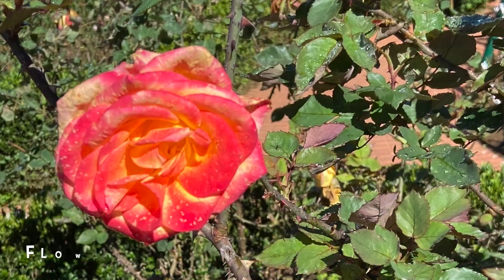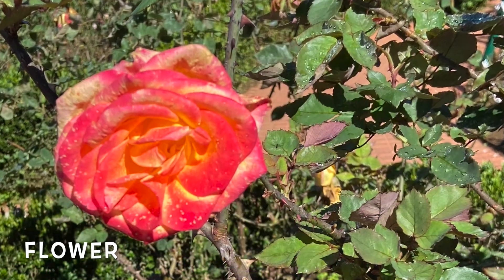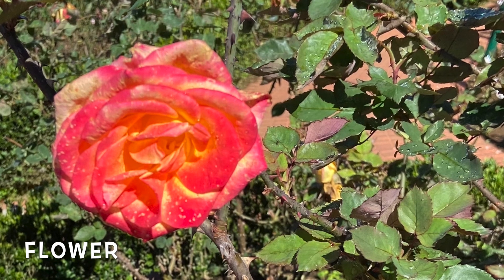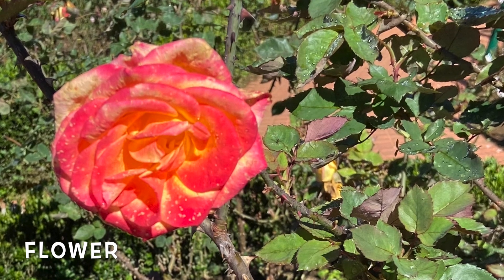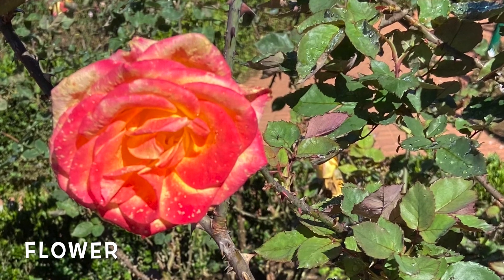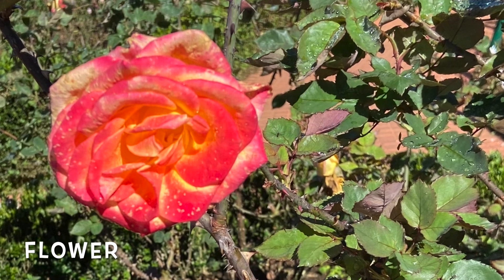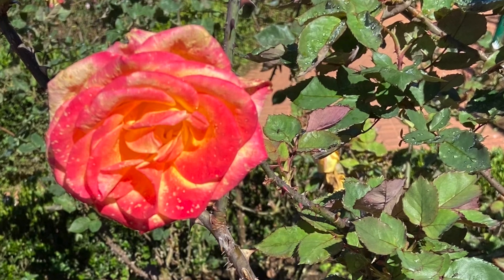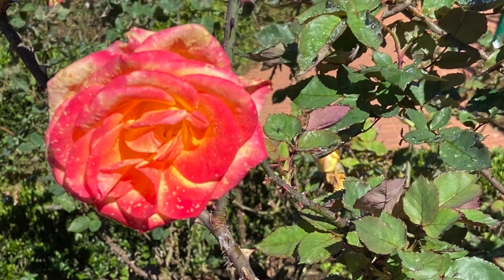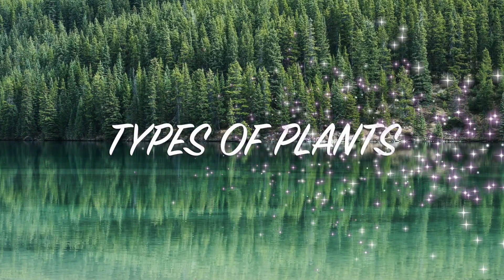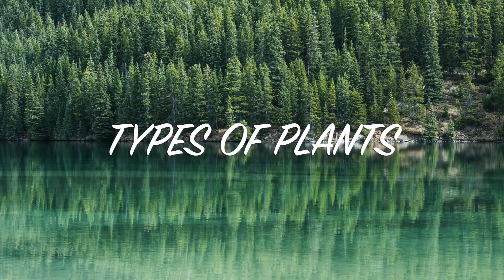Fourth, flower. The flower is the most beautiful part of the plant. The flower grows into a fruit. Fruits have seeds which can later grow into a new plant. Now we are going to see types of plants.